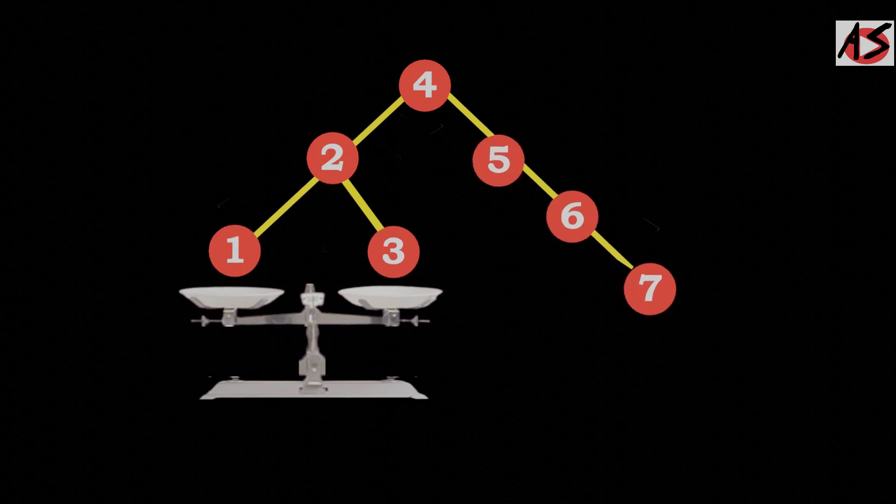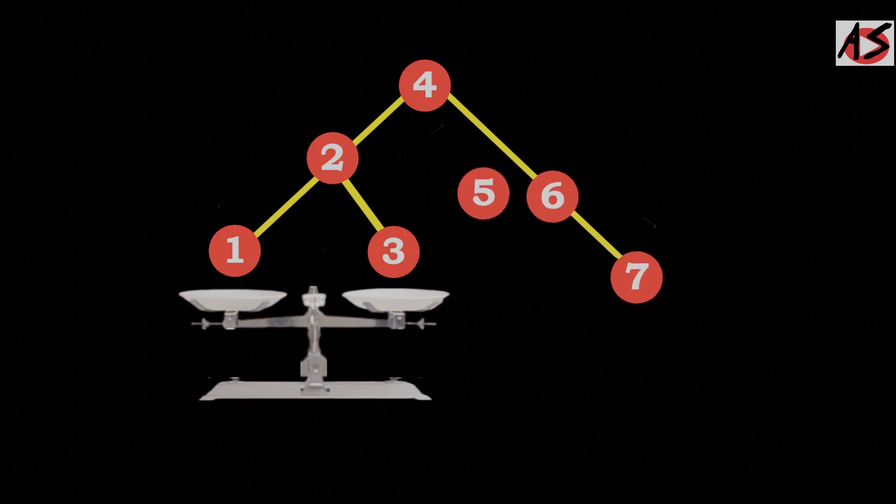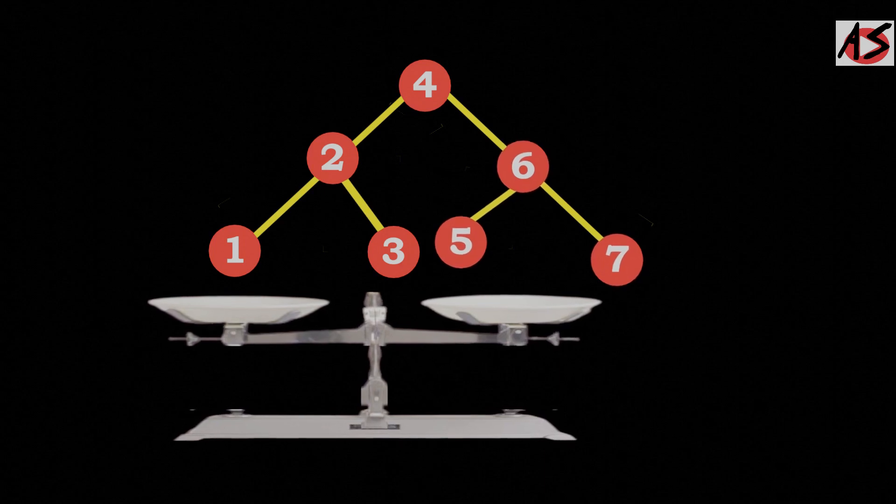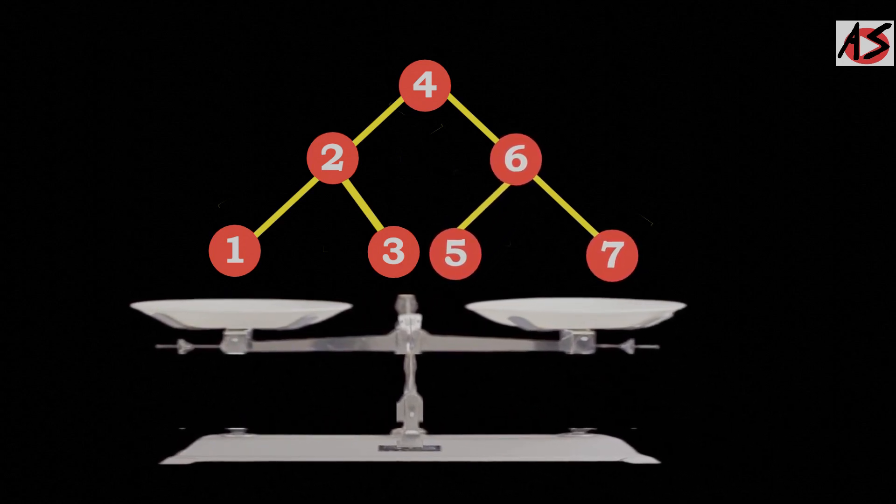Similarly, for right subtree, you take 6 as a root and do the left rotation.